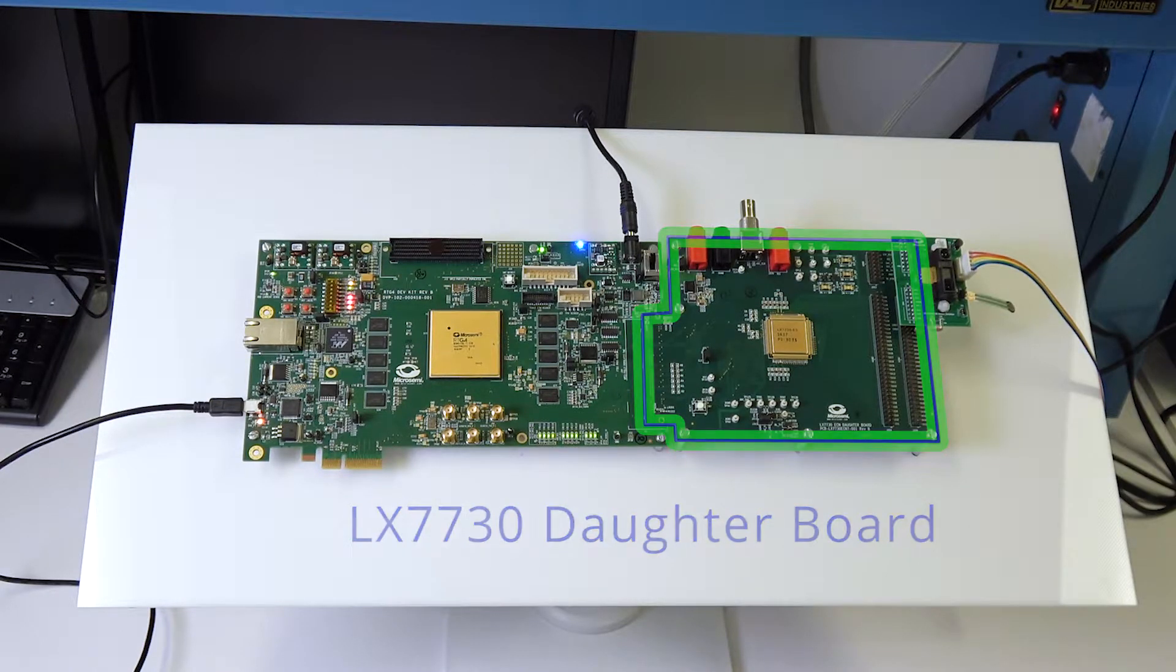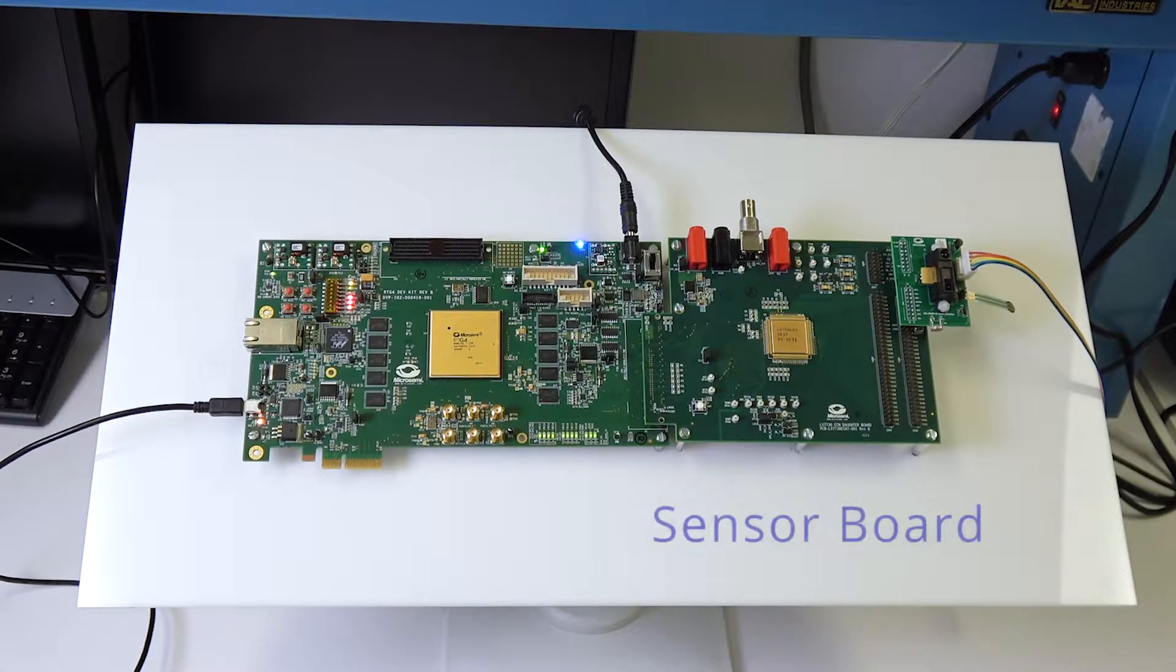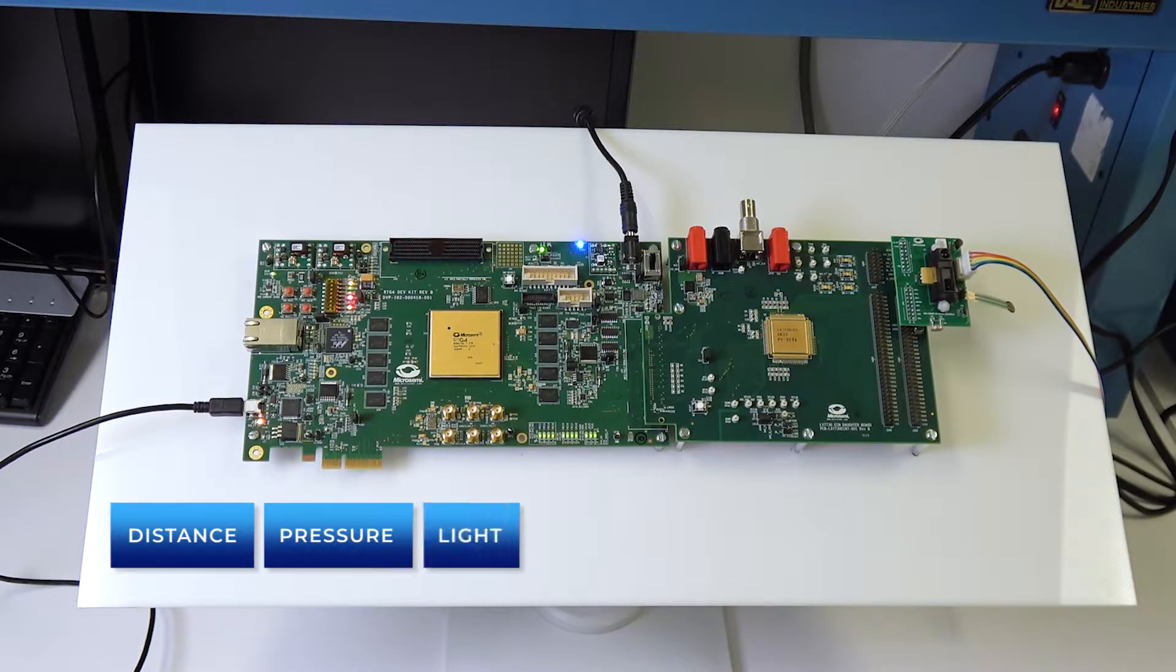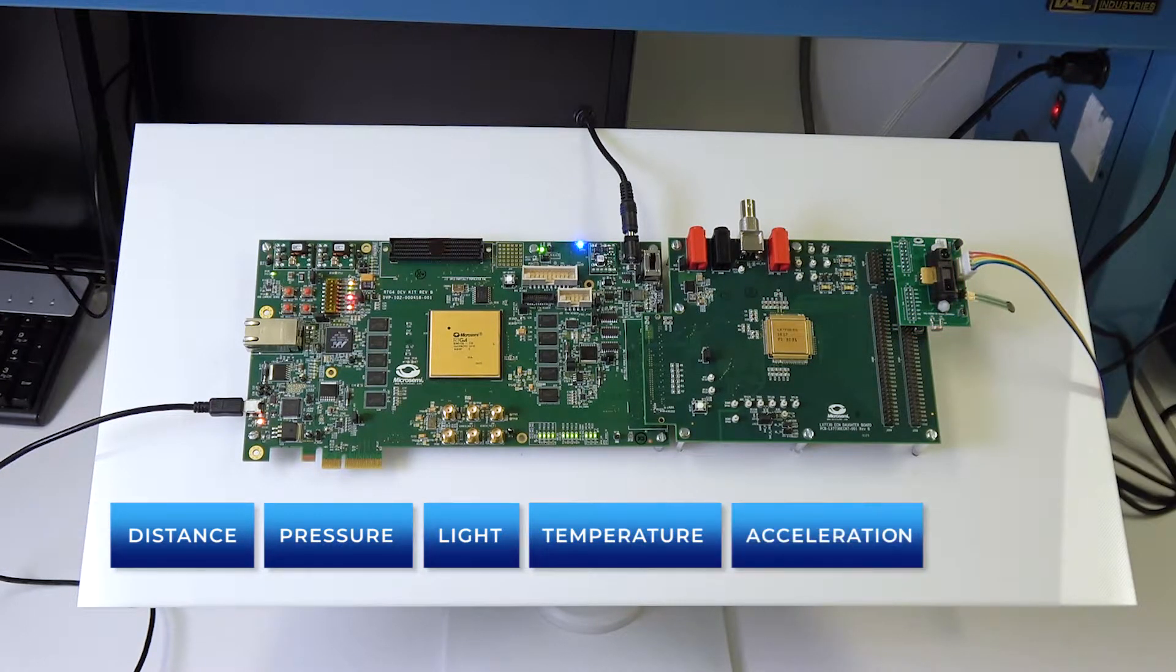Connected to that we have this smaller sensor board that contains six sensors that will measure distance, pressure, light, temperature, acceleration, and magnetic field.